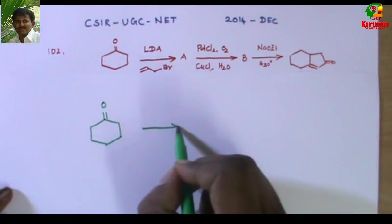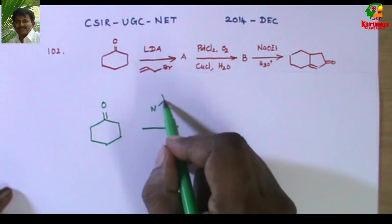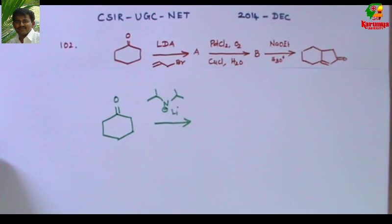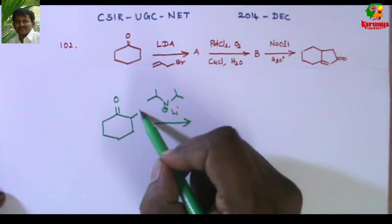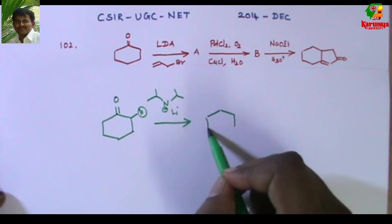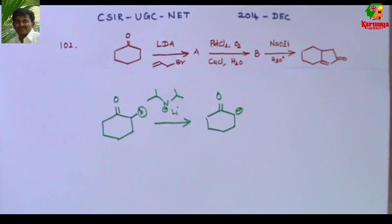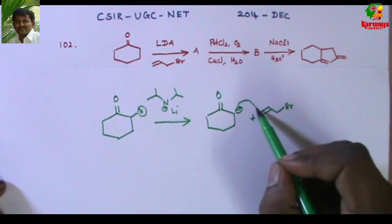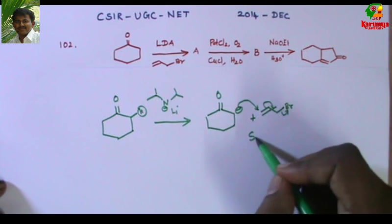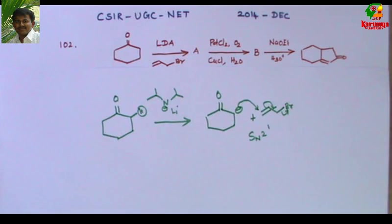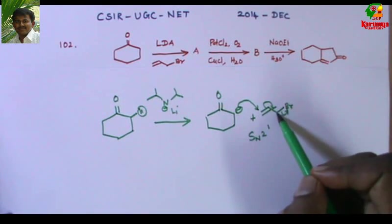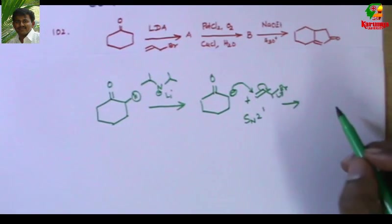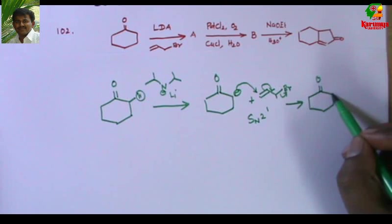Now let us go to the given problem. Cyclohexanone is treated with LDA, which is a hindered non-nucleophilic base. The base abstracts the acidic alpha proton to give a carbanion. This carbanion attacks allyl bromide — the mechanism may be SN2 (nucleophile attacks the terminal carbon) or SN2' (nucleophile attacks the gamma carbon) — to give the allylated product.